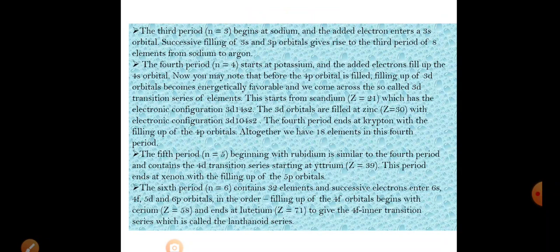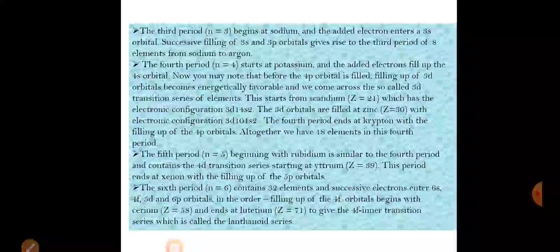Fourth period: n=4, starts with potassium. The outermost electron fills the 4s orbital. Before the 4p orbital is filled, the filling of the 3d orbital becomes energetically favorable, giving rise to the 3d transition series of elements. The general formula for d-block element configuration is (n-1)d. For the fourth period, n=4, so n-1=3, meaning electrons enter the 3d subshell. The 3d series starts from scandium (atomic number 21, configuration 3d¹ 4s²).